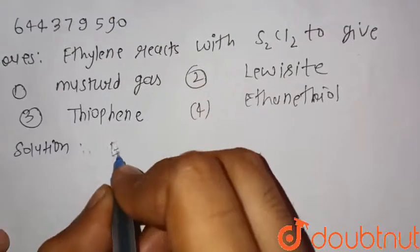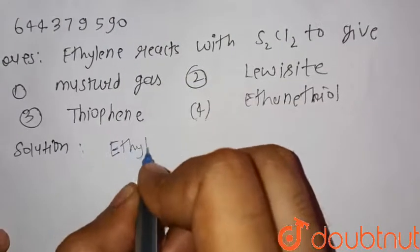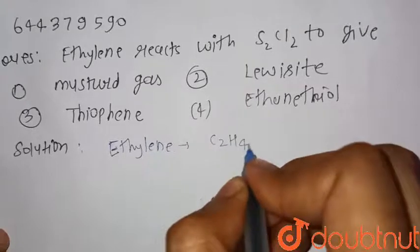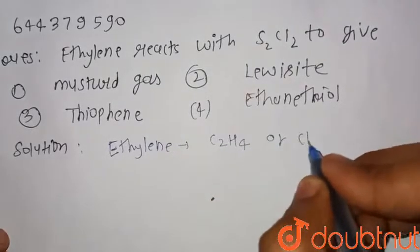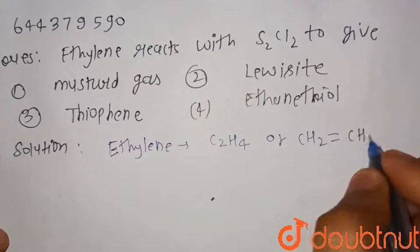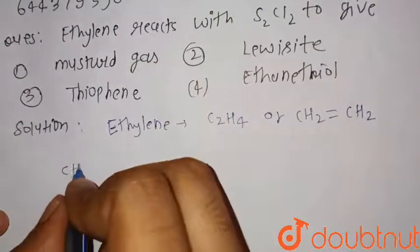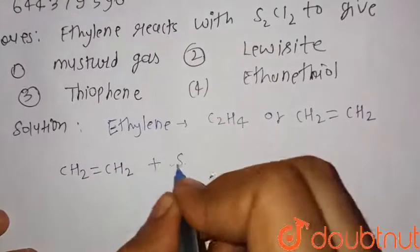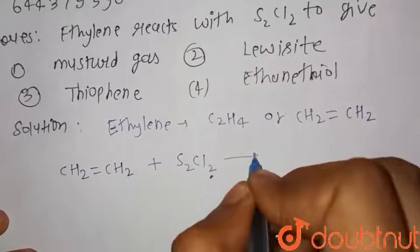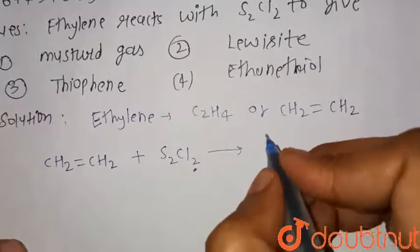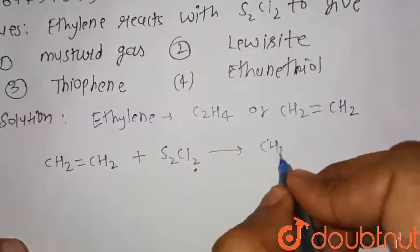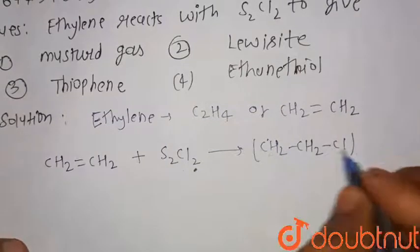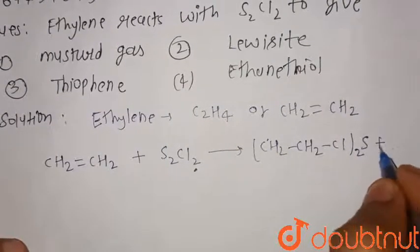ethylene is C2H4 or CH2 double bond CH2. So consider its reaction: CH2 double bond CH2, this is ethylene, with S2Cl2.